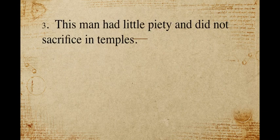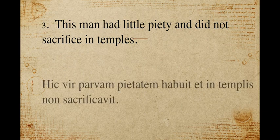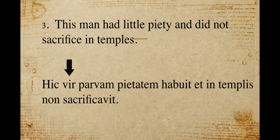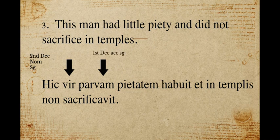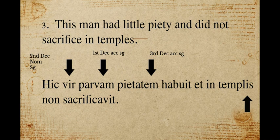Sentence number three: 'This man had little piety and did not sacrifice in temples.' The correct Latin form would be: 'hic vir parvam pietatem habuit et in templis non sacrificavit.' Vir, since it is the subject of the verb — this man had — is second declension nominative singular, ending in -r. Parvam describes pietatem, which is feminine singular and the direct object, so it's first declension accusative singular. Pietatem is a third declension noun, accusative singular, ending in -em. Templis uses 'in' for location, which takes the ablative, so templis is second declension ablative plural.